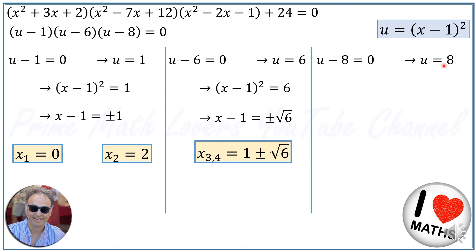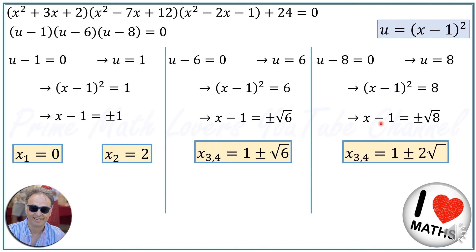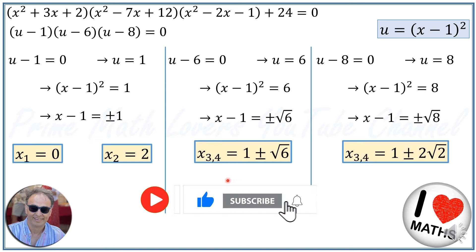Case 3: u-8=0, so u=8. This means (x-1)²=8. Taking the square root of both sides: x-1 = ±√8. We know that √8 = 2√2 (since 8=4×2 and √4=2). So x₅ and x₆ are equal to 1 ± 2√2.